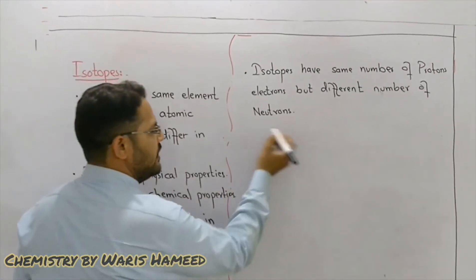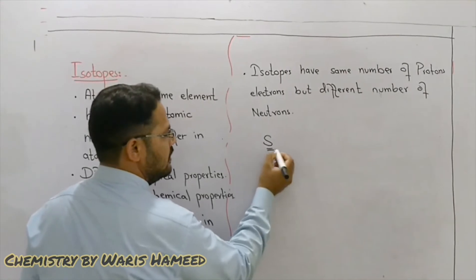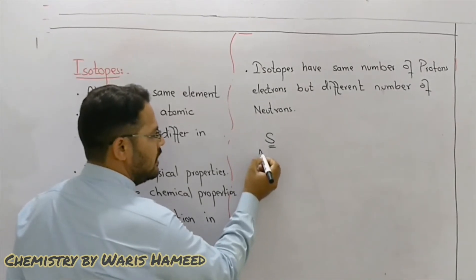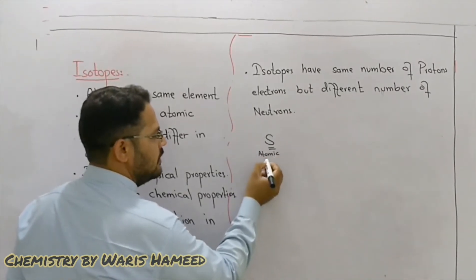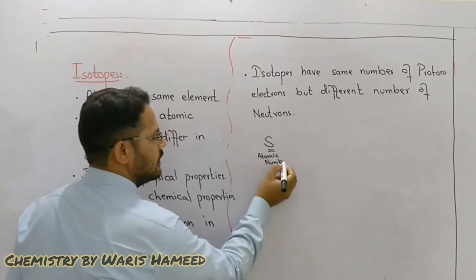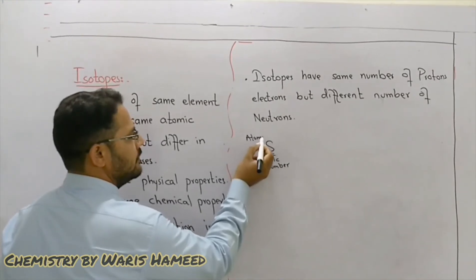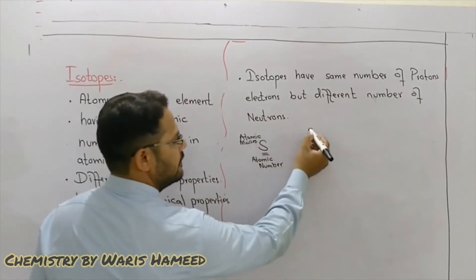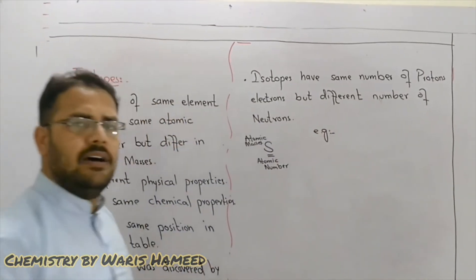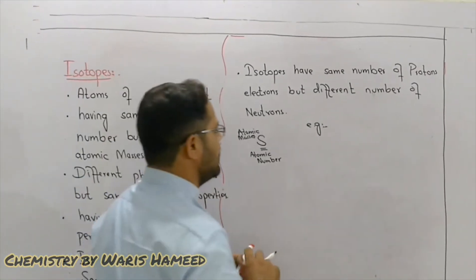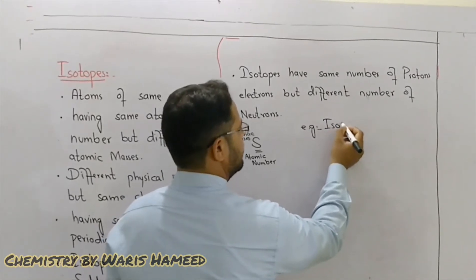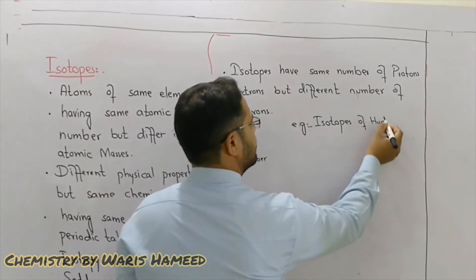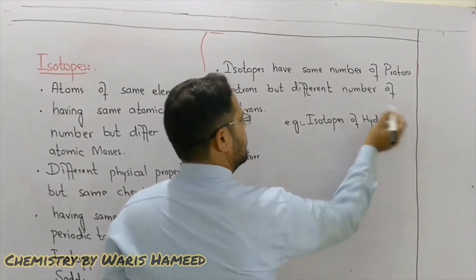To show isotopes, we write the symbol of the atom, and here we write the atomic number, and here we write the atomic mass.